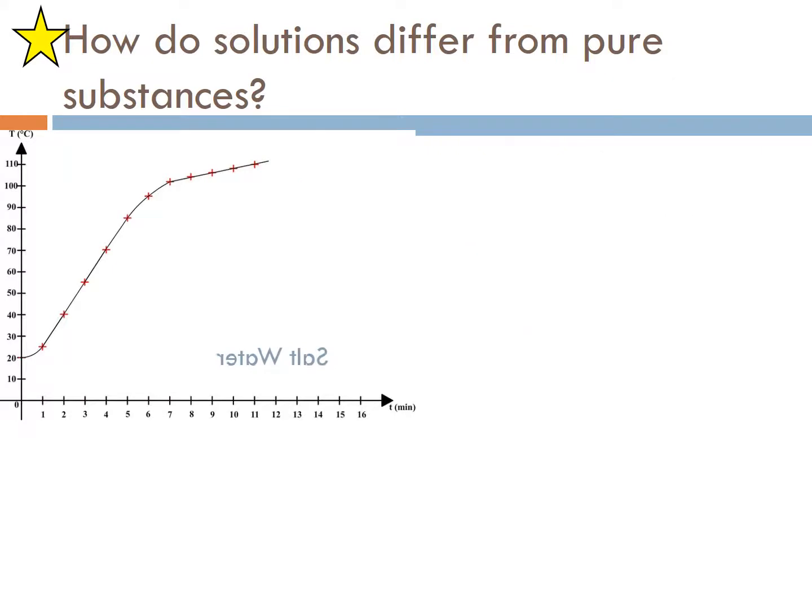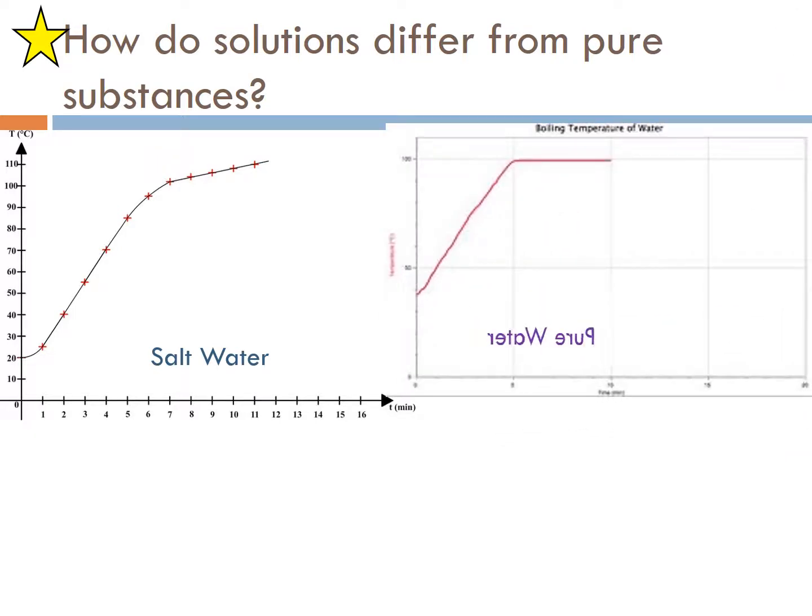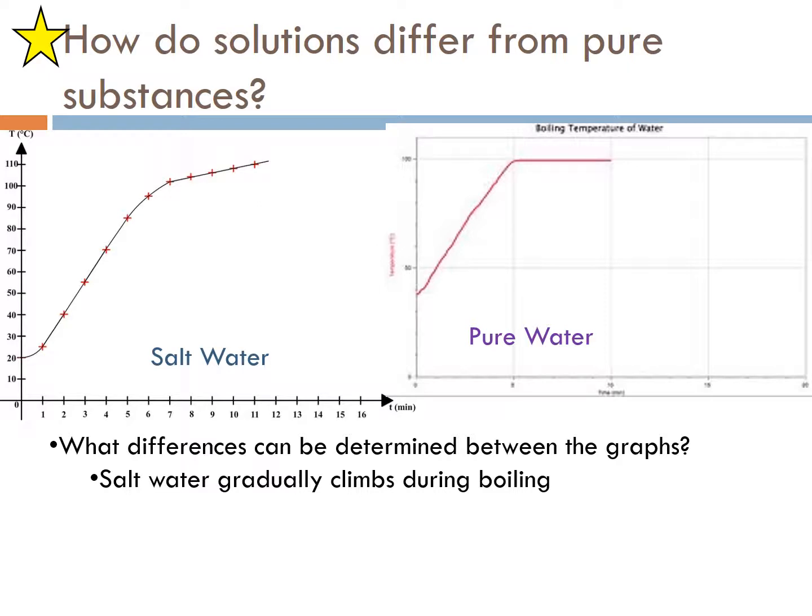How do solutions differ from pure substances? Salt water, if you try to boil salt water there's really a lack of phase change. You can see the difference is that you won't get a constant temperature at 100, it starts to raise gradually, it doesn't have a plateau. The difference is determined by not being a pure substance. So salt water is going to have a gradual climb in temperature during boiling, where water would have a flat plateau.